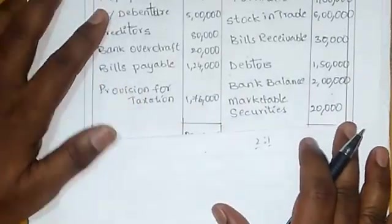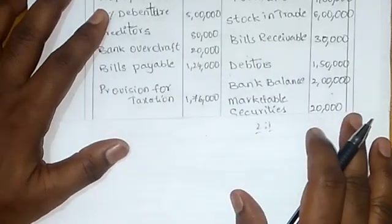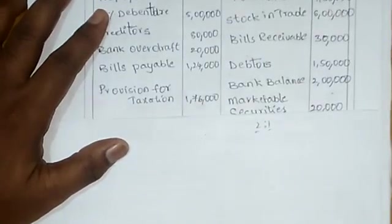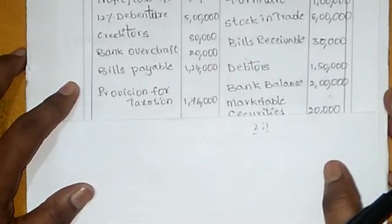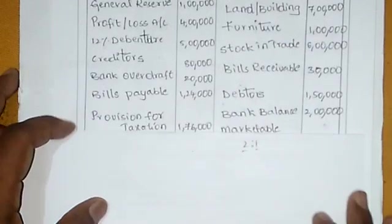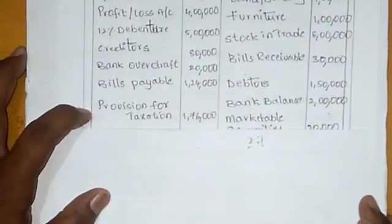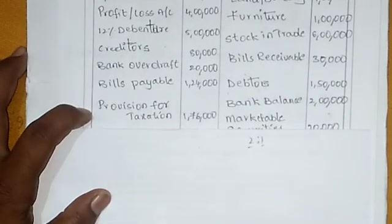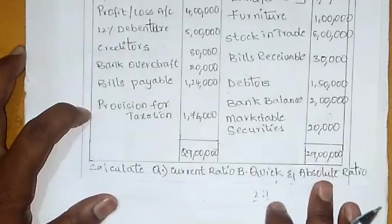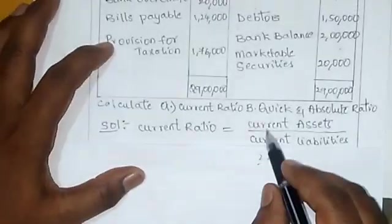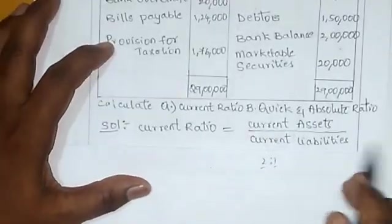Now let's calculate the current ratio. Before calculating, let's discuss it briefly. Current ratio is a liquidity ratio that measures a company's ability to pay short-term obligations within one year. The formula is: current ratio is equal to current assets divided by current liabilities.